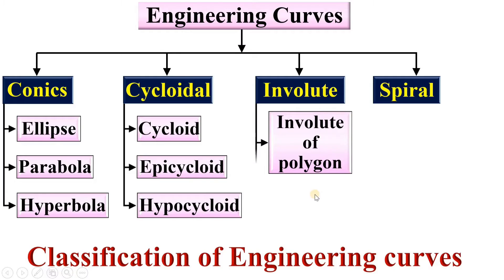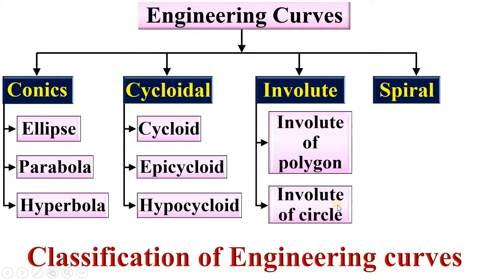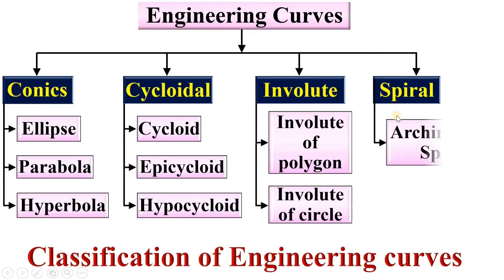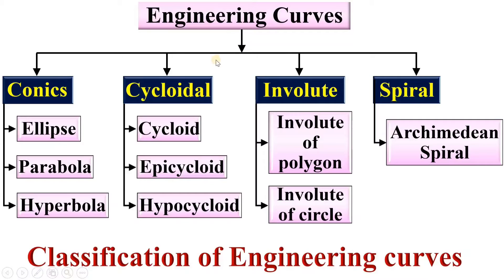For involute, there are two different types of curves: involute of polygon and involute of circle. For spiral, there are basically two types: Archimedean spiral and logarithmic spiral. But Archimedean spiral is mostly used for the engineering drawing subject.